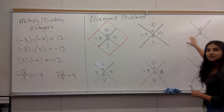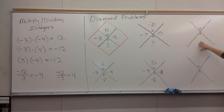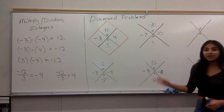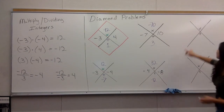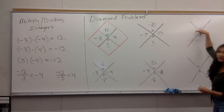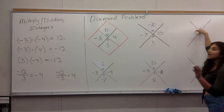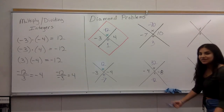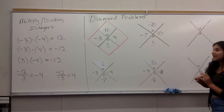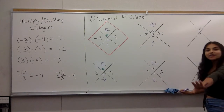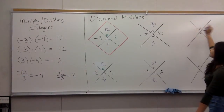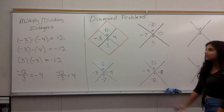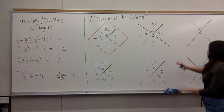Now over here we have two blank diamond problems. You can ask your mom, your dad, your sister, or come up with the numbers yourself. Write down two numbers, whichever numbers you want, and then solve them on your own to see that it can really be any two numbers. Try to have one problem with a negative and a positive, and the second with two negatives, so you can practice the different rules.